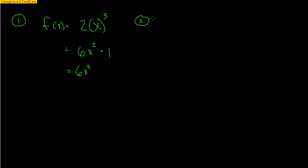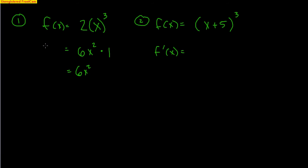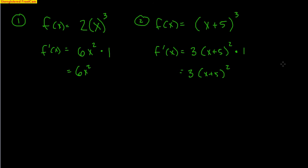Watch what happens with something a little more complicated, like x plus 5 to the 3rd. Now my u is not just x — it's a quantity, x plus 5. To find the derivative, that 3 falls down in front, giving 3 times x plus 5 to the 2nd. But then I have to multiply by the derivative of the inside. The derivative of x plus 5 is just 1, so my derivative is 3 times x plus 5 squared.